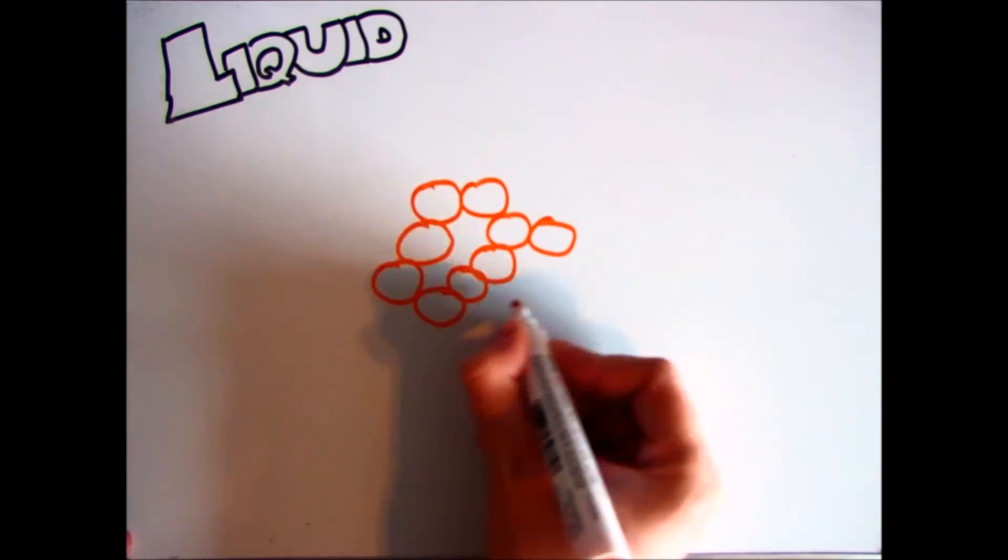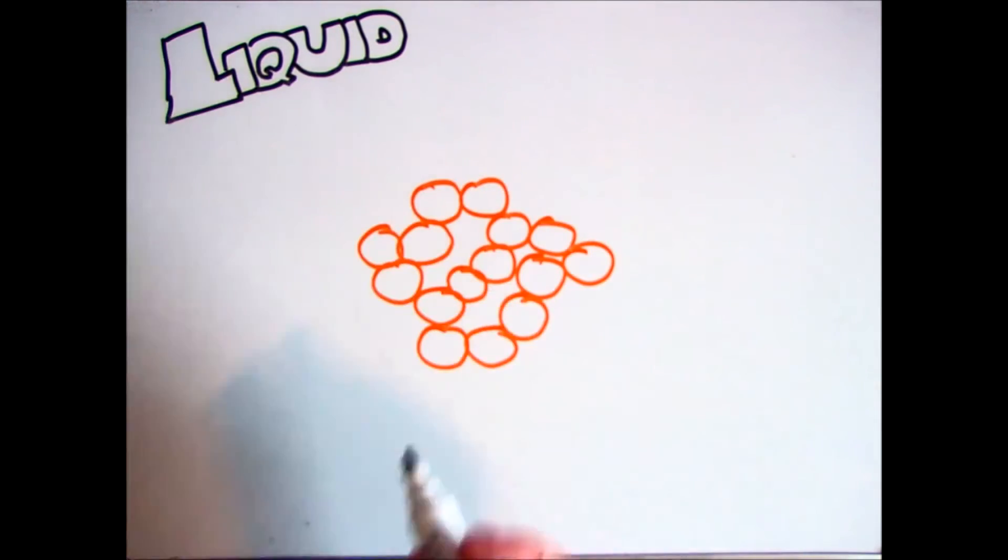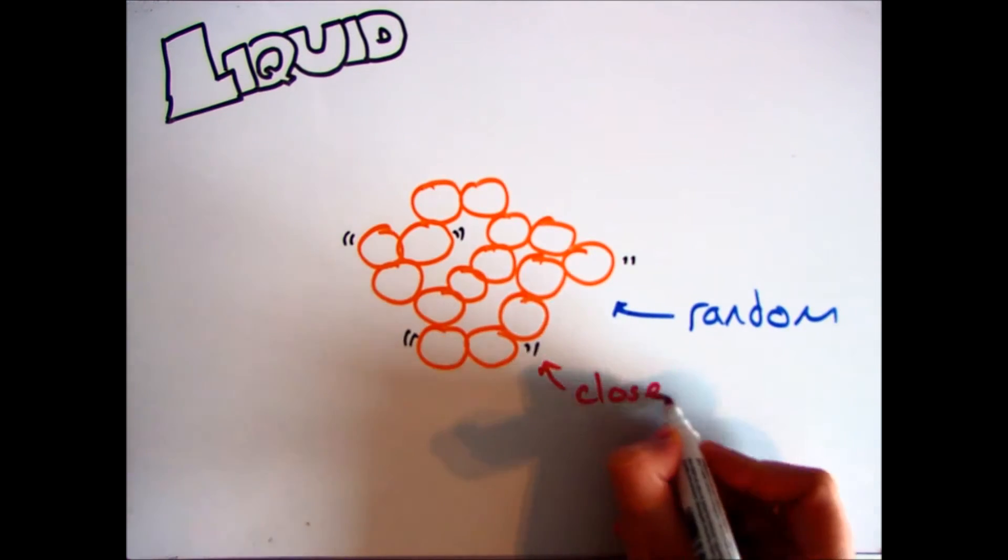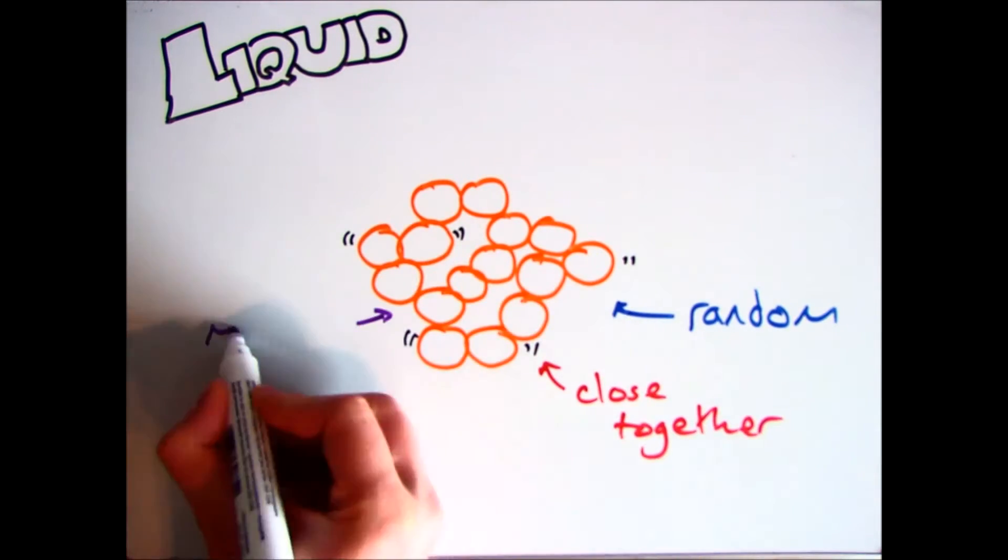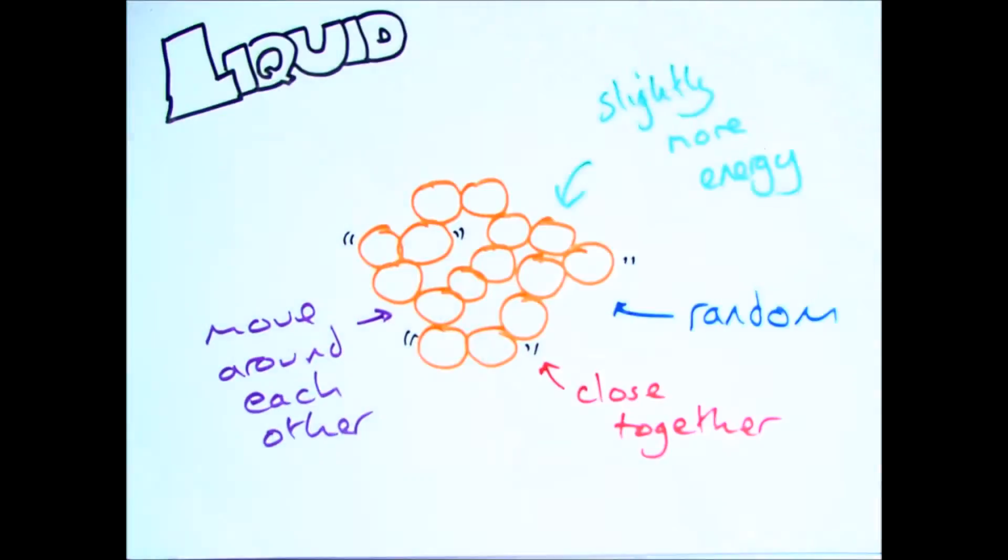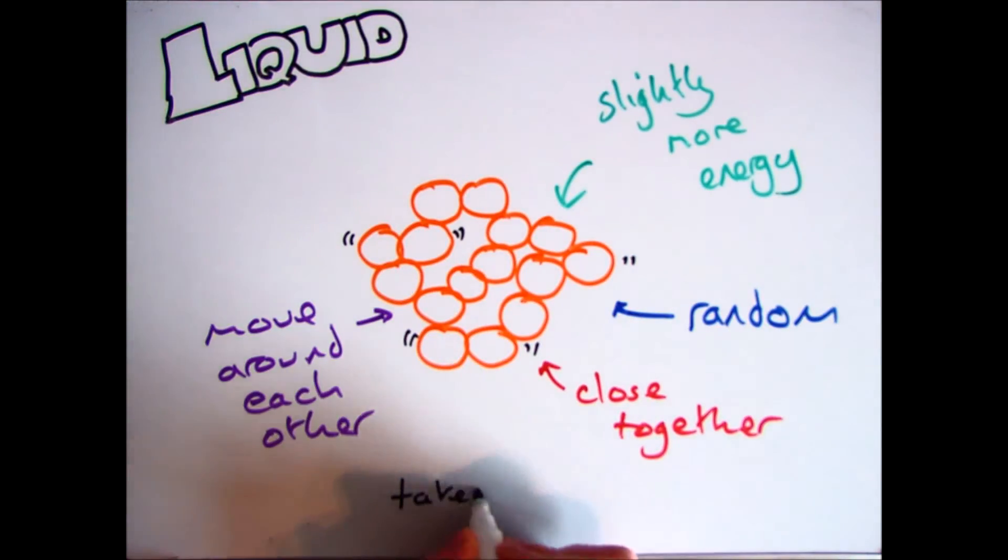When we heat up a solid and it turns into a liquid, we turn around and say that it no longer has a regular pattern. The particles can move around each other, which means that they're in a random pattern, although they're still close together. It has a lot more energy within the molecule, so the vibrations are a lot more, and it fills the shape of the container.